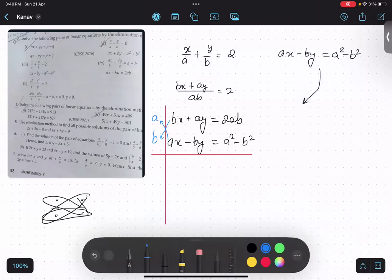So what we will get over here? ABx plus A²y equals to 2A²B.